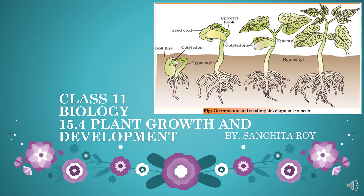The parts where the meristematic tissues are present are the regions where the growth of the plant is taking place. Now in this video I am going to discuss the different factors. In my previous video I discussed that there are intrinsic and extrinsic factors. In the intrinsic factors, growth regulators are responsible for helping in the growth and development of the plant. The extrinsic factors — that is light, temperature, water, carbon dioxide — also play a very important and vital role for the growth of the plant. So in this video I am going to discuss the growth regulators, that is the phytohormones, which are responsible for the growth and development of the plant.